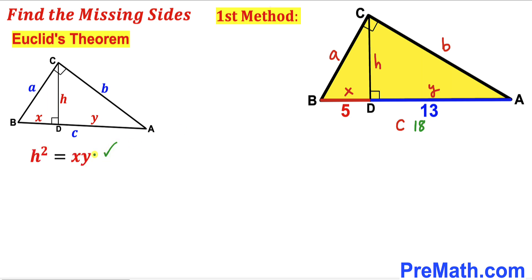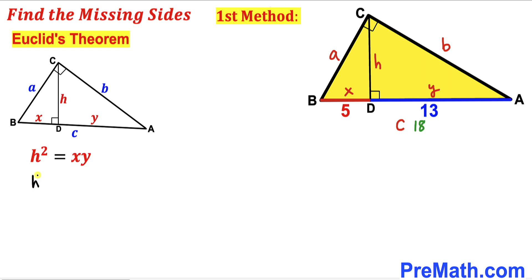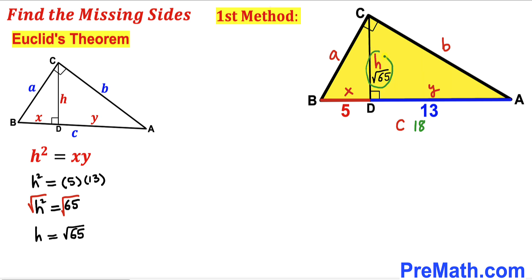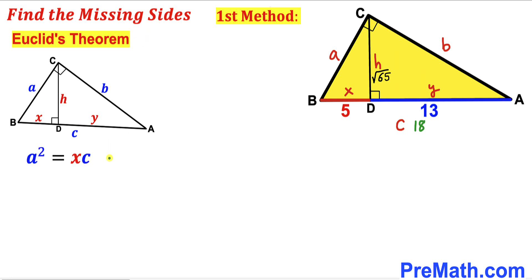Here's our first method. Let's recall Euclid's first theorem: for right triangle ABC with perpendicular CD, h squared equals the product of x and y. In our case x is 5 and y is 13, so h squared equals 5 times 13, giving us h squared equals 65. Taking the square root of both sides, h equals the square root of 65 units.